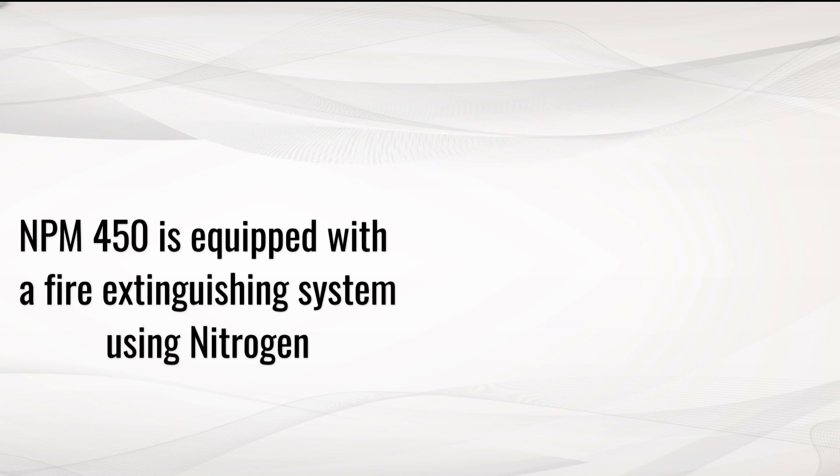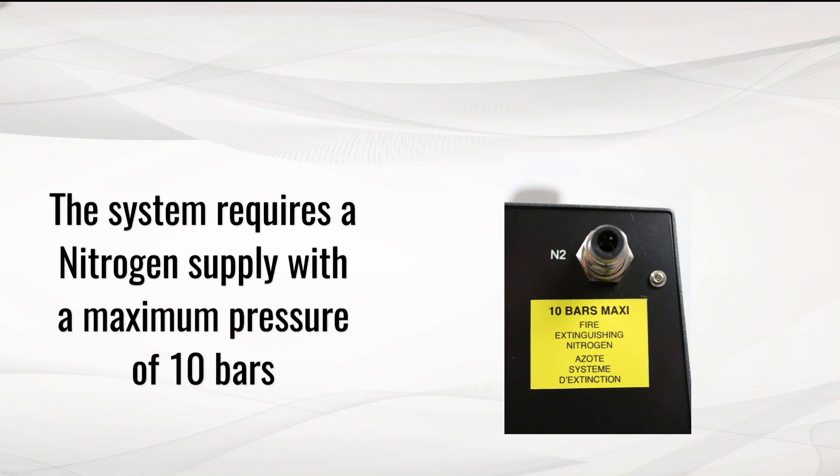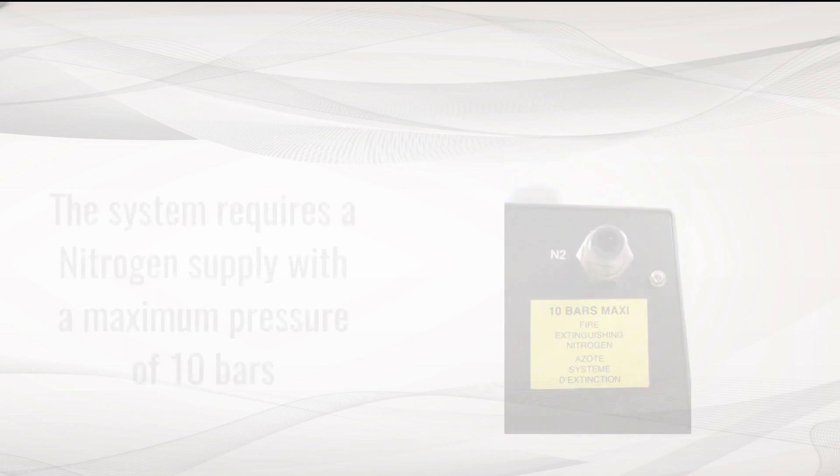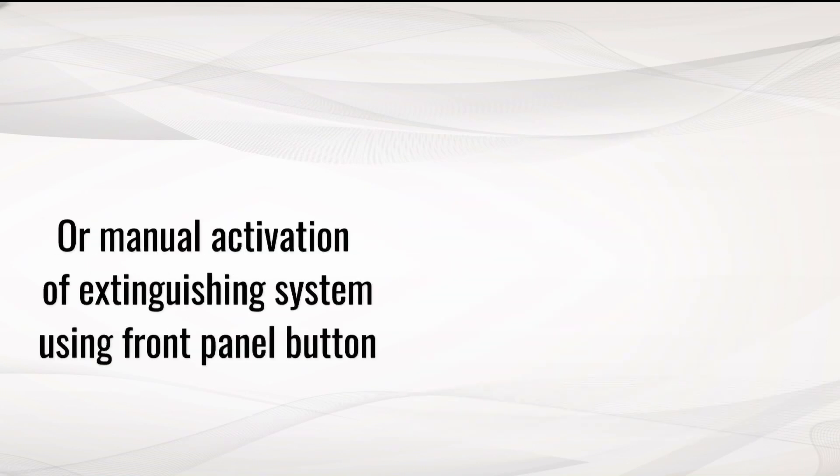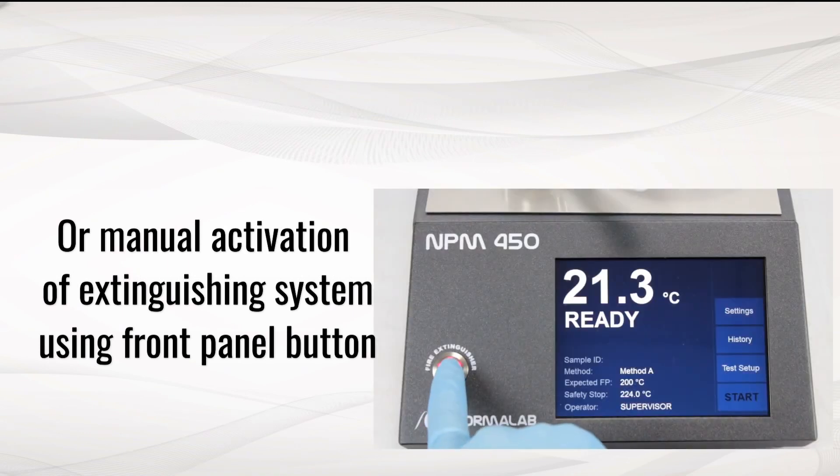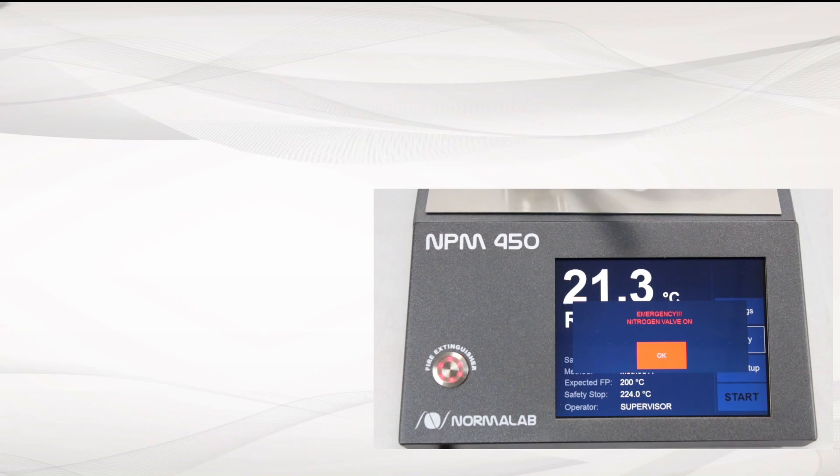The NPM 450 is equipped with a fire extinguishing system using nitrogen. The system requires a nitrogen supply with a pressure of 10 bars maximum. The automatic extinguishing system uses a fire detector by ionization sensor, or you can manually activate the extinguishing system using the front panel button.